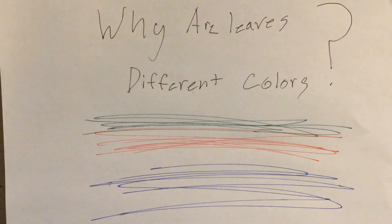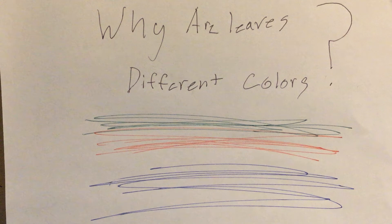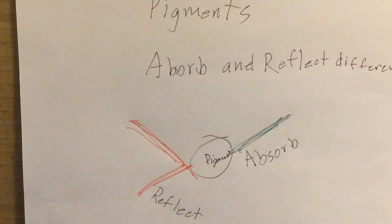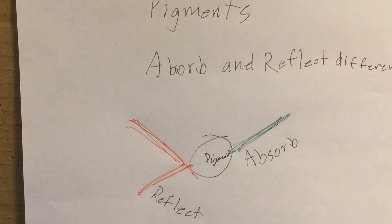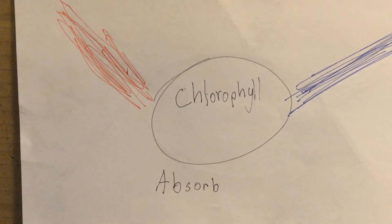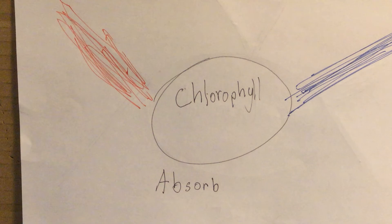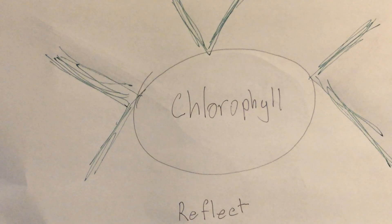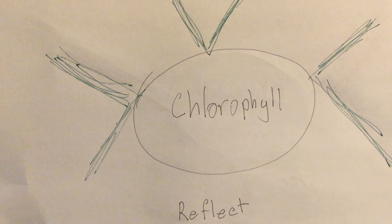Why leaves are different colors? Pigments absorb and reflect different colors of light. Fluorophobes are red and blue light while reflecting green light. That is why it appears green.